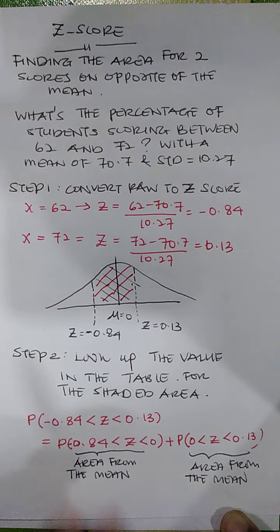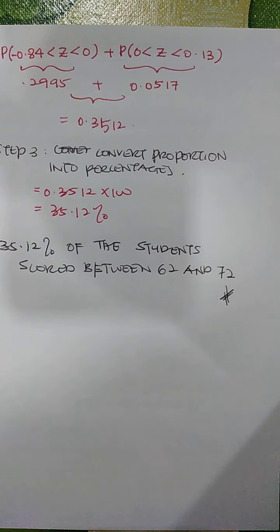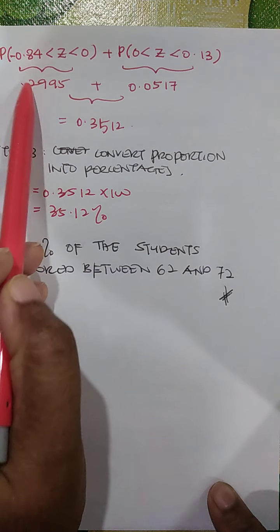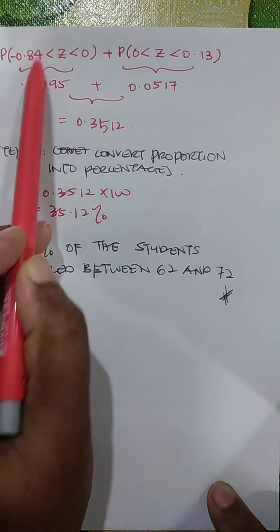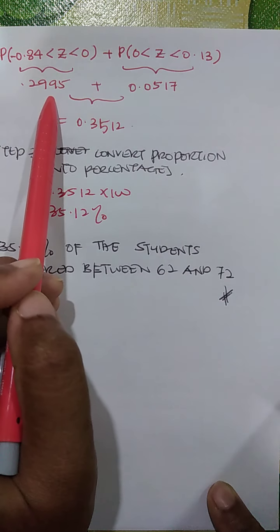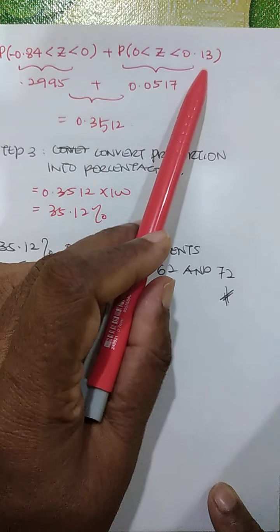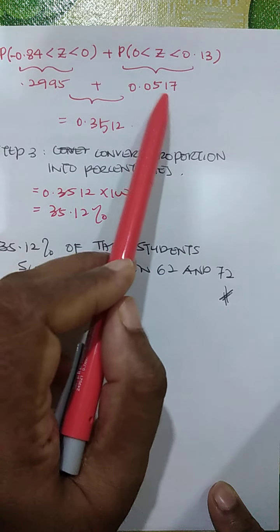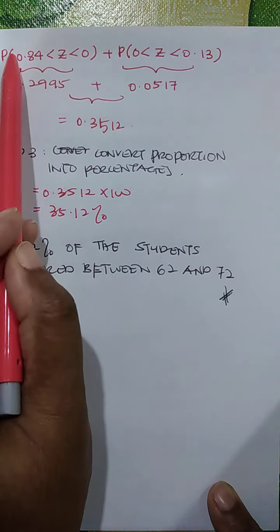So from the table, for the first area between negative 0.84 and 0, you will get 0.2995. Between 0 and 0.13, you get 0.0517. Some of you might ask, this is negative.